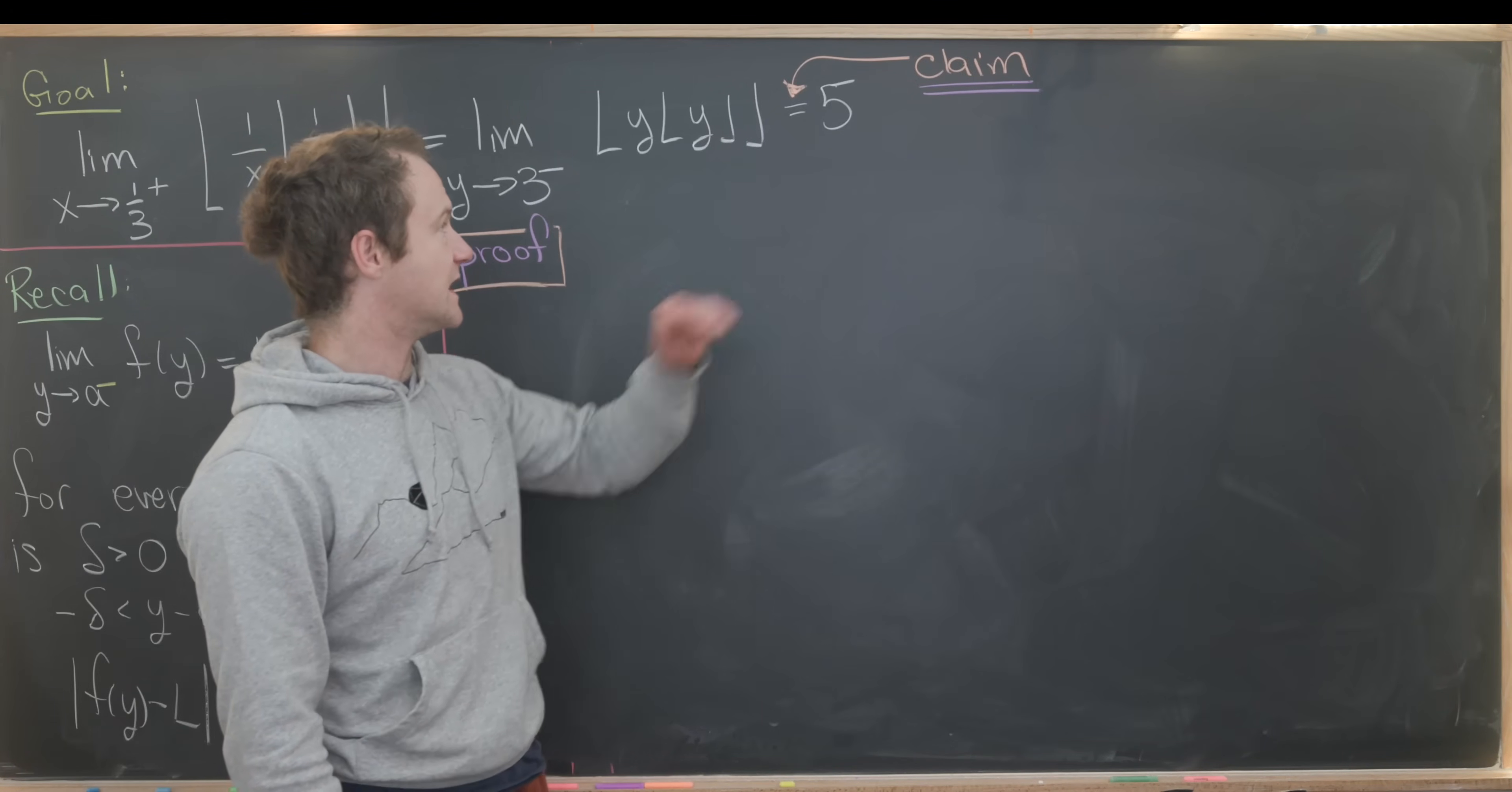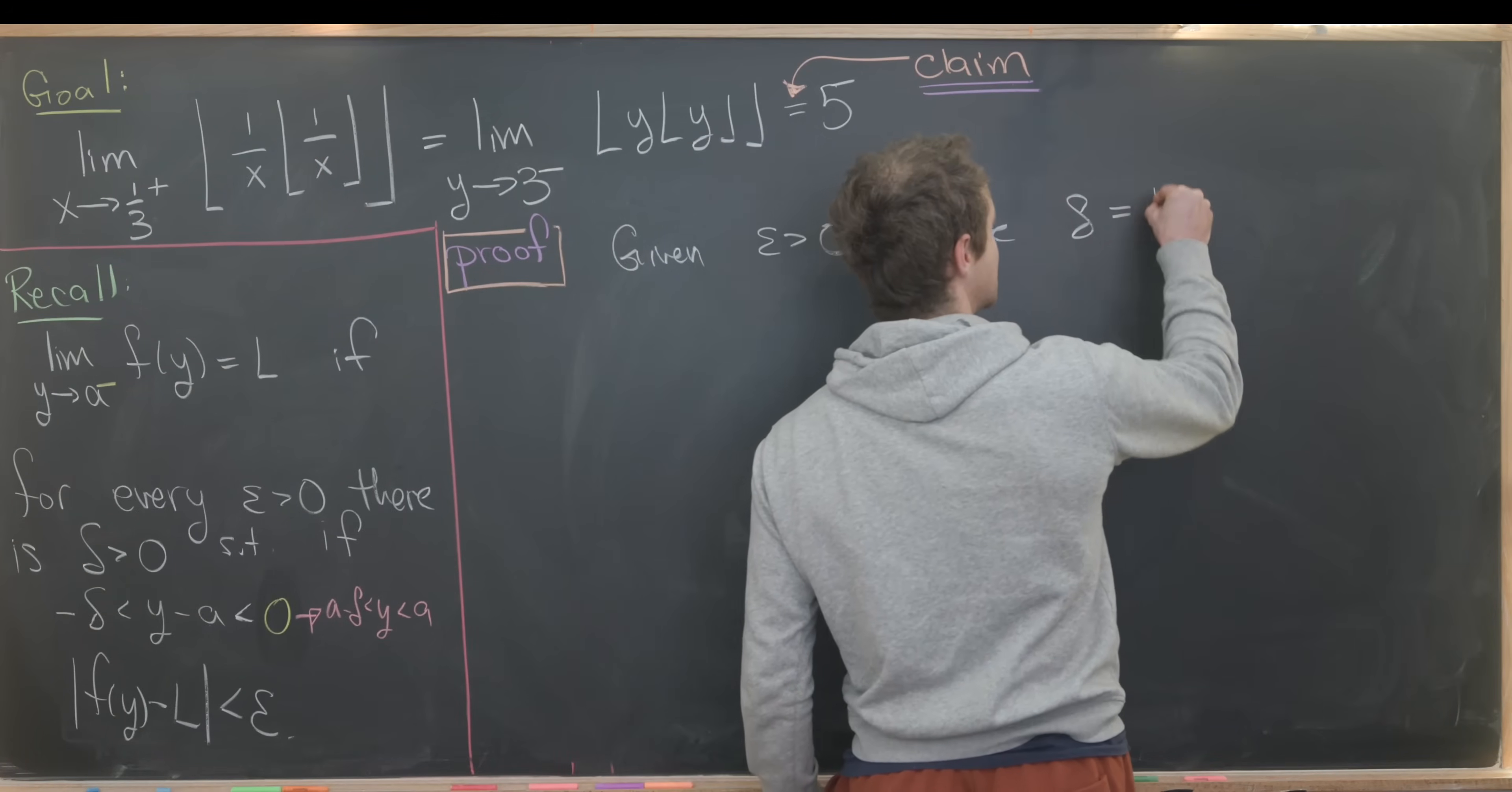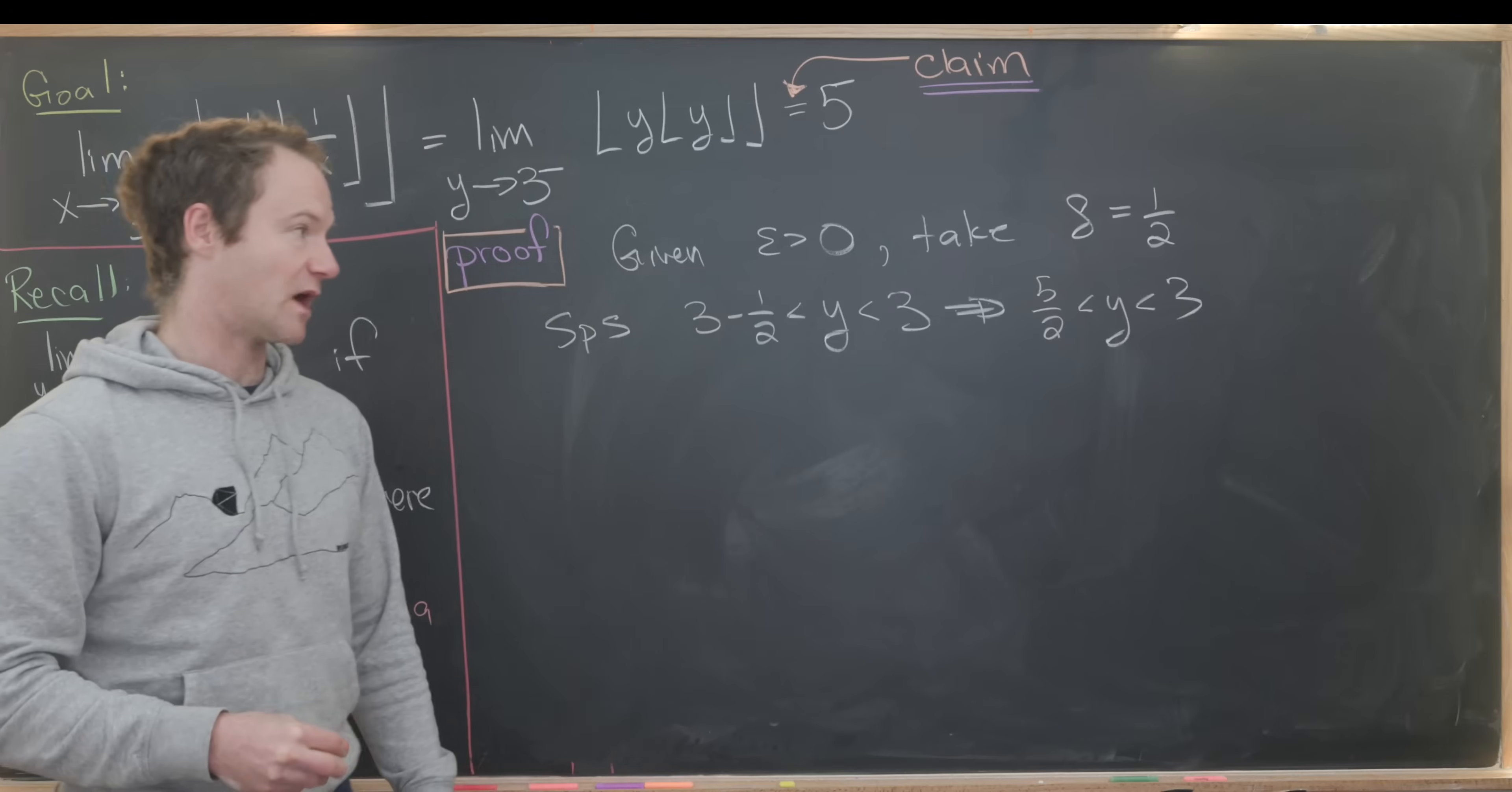On the last board, we motivated that our limit was equal to 5, and we're going to prove that as this claim. Let's do it the proper way. Let's say we are given epsilon bigger than 0, arbitrarily chosen. Let's take delta to be, well, generally it's something in terms of epsilon, but as we saw via our calculations, we could take delta to be equal to 1 half. Taking delta equal to 1 half, let's suppose that y satisfies this inequality. In other words, y is between 3 minus 1 half and 3, which can easily be rewritten as 5 over 2 and 3. We have 5 over 2 is less than y, which is less than 3.